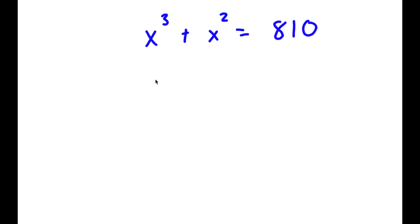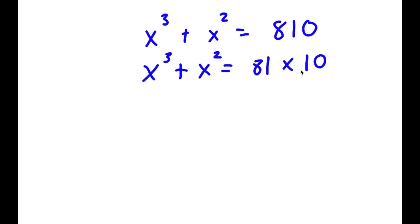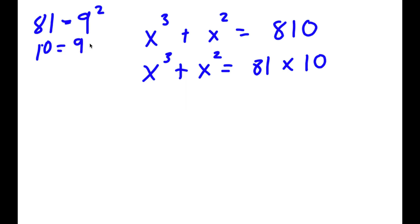So what we are first going to do is rewrite 810 as 81 times 10. So now I have x to the power of 3 plus x squared is equal to 81 times 10. Now 81 is equal to 9 to the power of 2, and 10 is equal to 9 plus 1. So I'm going to replace 81 with 9 squared and 10 with 9 plus 1.